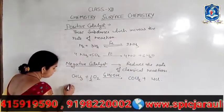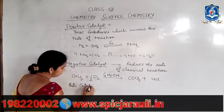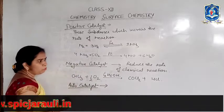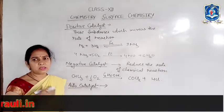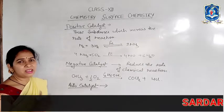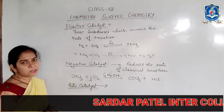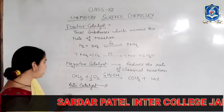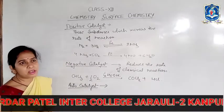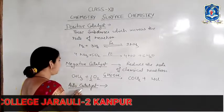The next type is auto-catalysts. When some product substances formed in a reaction act as a catalyst to increase the rate of that reaction, they are known as auto-catalysts. In some reactions, the product of the reaction increases the velocity of the reaction.